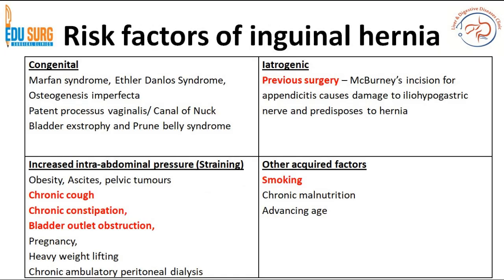What causes hernia? Risk factors of inguinal hernia are multifactorial. It can be congenital or acquired. Congenitally, it is commonly seen in patients suffering from Marfan syndrome, Ehlers-Danlos syndrome, osteogenesis imperfecta, and patent processus vaginalis. It is also seen in patients with bladder exstrophy and prune belly syndrome.